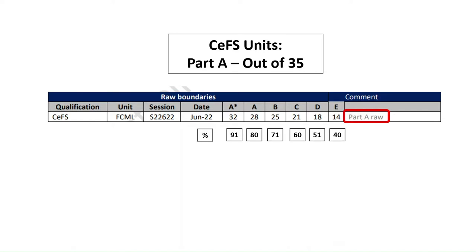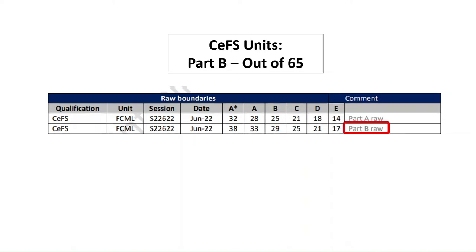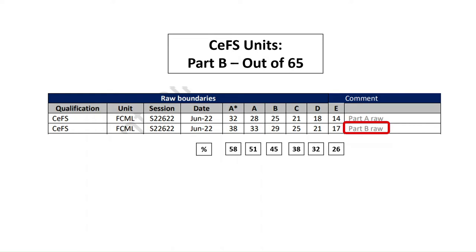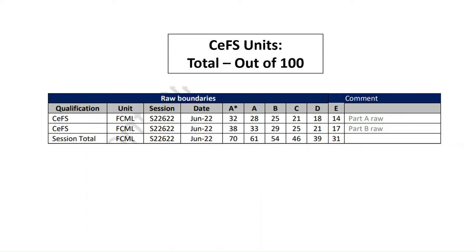Bear in mind this was the Unit 2 paper done in June 2022. What about Part B of that paper? That was out of 65, and you need 38 out of 65 to get an A star, or 58%. To get an A, you needed 51% or 33 out of 65, 29 out of 65 for B, and so on. How do you work out the total grade for the Unit? Well, you add the Part A and Part B together, and you'll come up with a total grade for Unit 2.